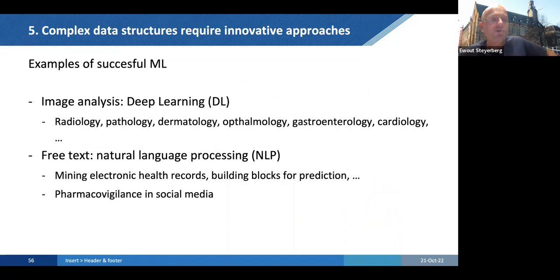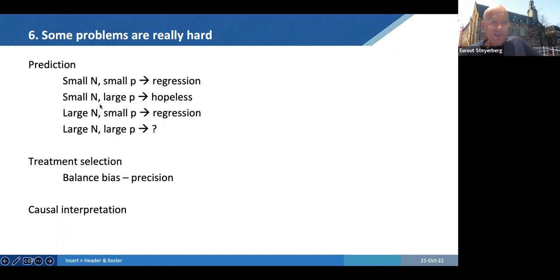Okay, so I have two more statements. Complex data structures require innovative approaches. So that's actually what you were alluding to, David, I think, with image analysis. Deep learning is really successful there, and that's happening in radiology, pathology, dermatology, all kinds of fields. Really interesting to see how that will evolve. Another area is the free text analysis, natural language processing, NLP. That's being used in quite some projects now that I see around me. Detection of depression in an early phase, etc., that kind of projects. And mining electronic health records, building blocks for prediction. So maybe we can do this as a pre-processing to learn, get some signal from free text and use that in a more classical prediction model further on. And also pharmacovigilance in social media as an example. Really, really fascinating. So there are some promising areas.